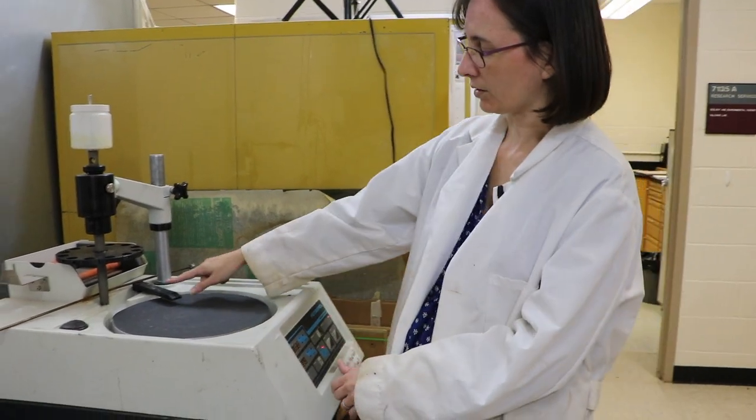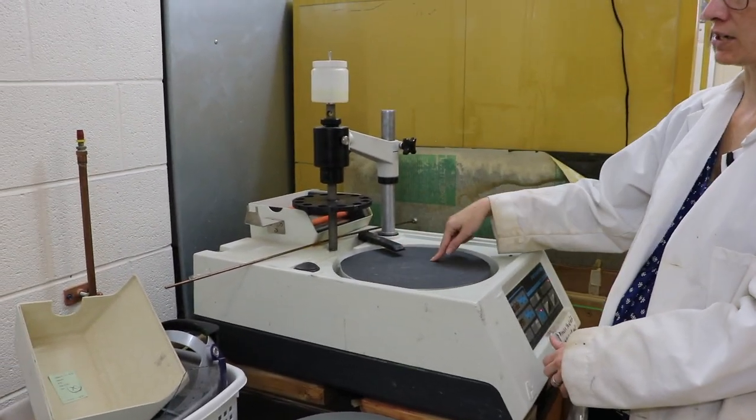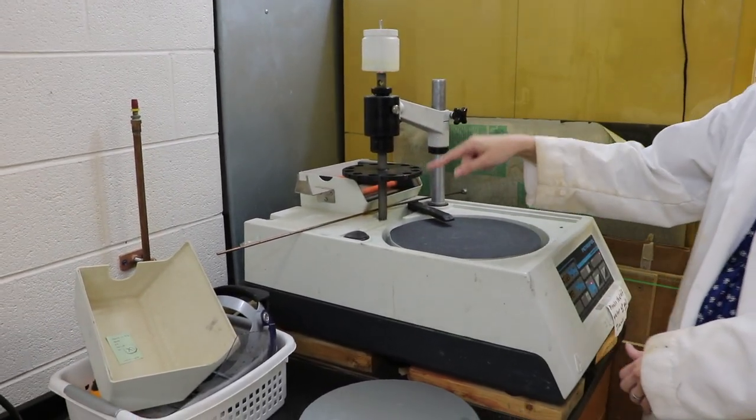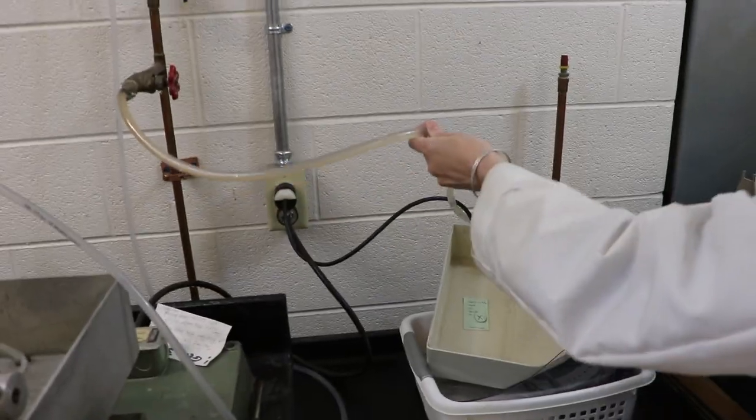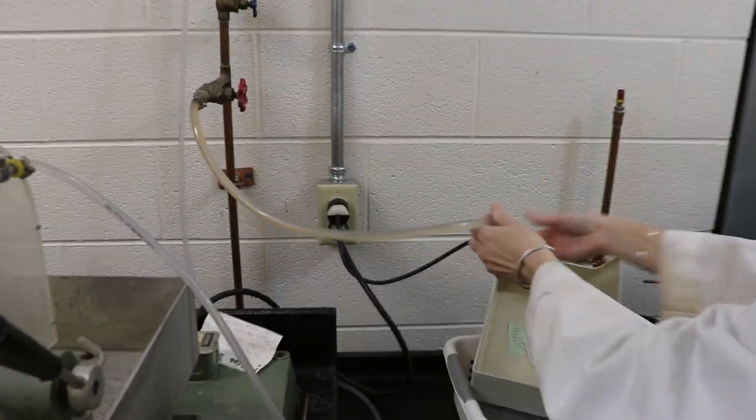So right now I open the water faucet so that when I do turn the water on, it will come out of the machine and not get backed up in the tube from the wall to the machine. This is the plastic tube from the wall to the machine.